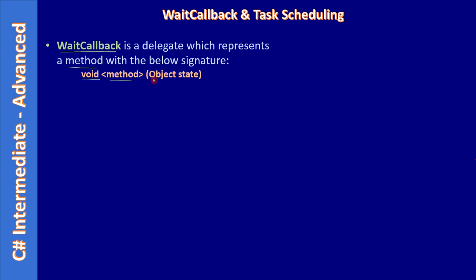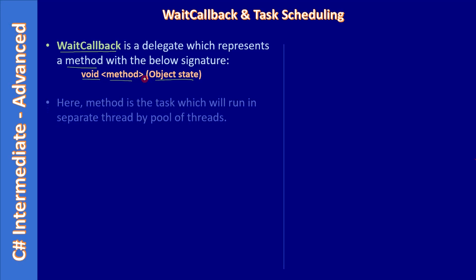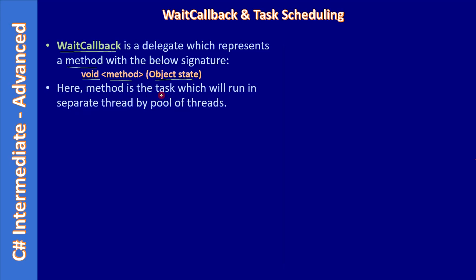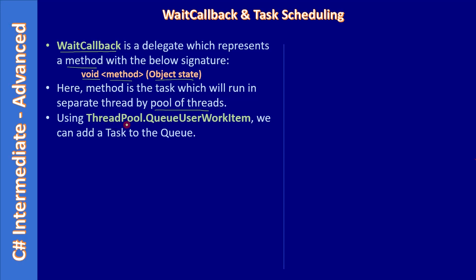Our RandomGen method doesn't take any parameter, which means we need to change it so that it takes an object as a parameter. The method is the task which will run in a separate thread by the thread pool. So we are going to convert our RandomGen method into a WaitCallback method — the method is the task which will run in a separate thread by the thread pool.